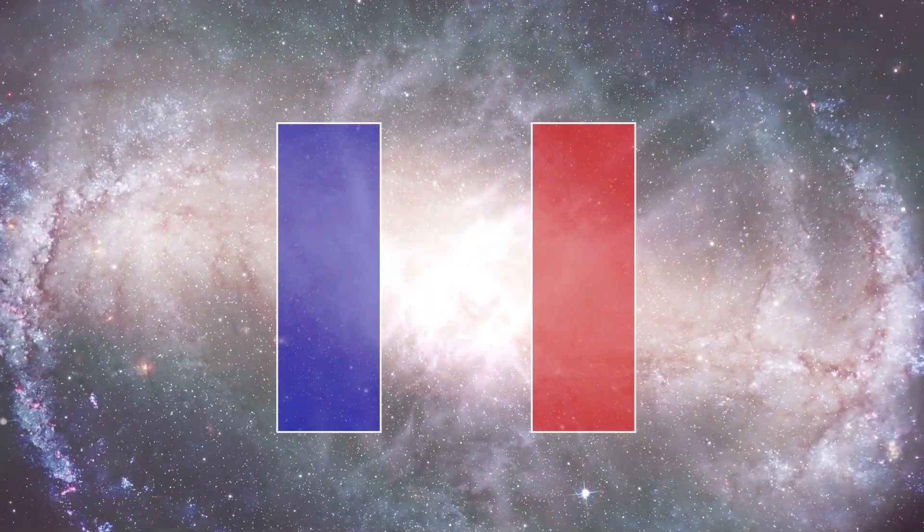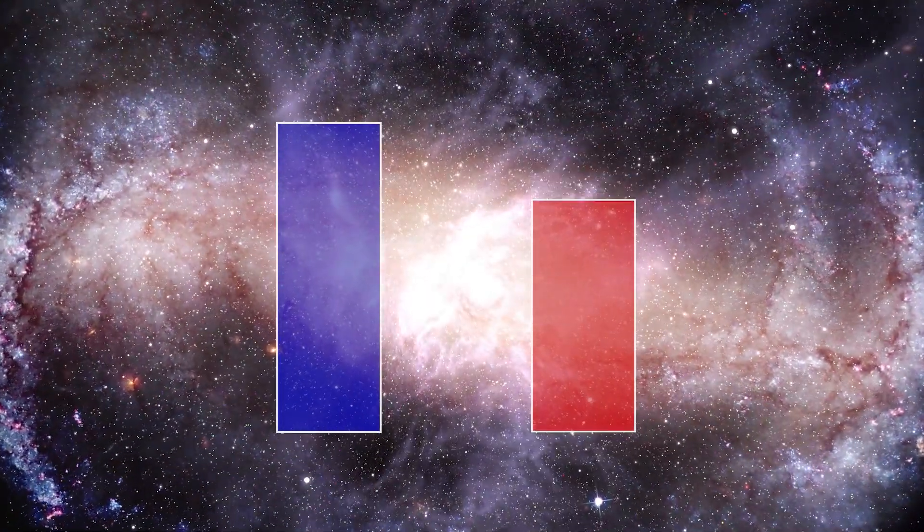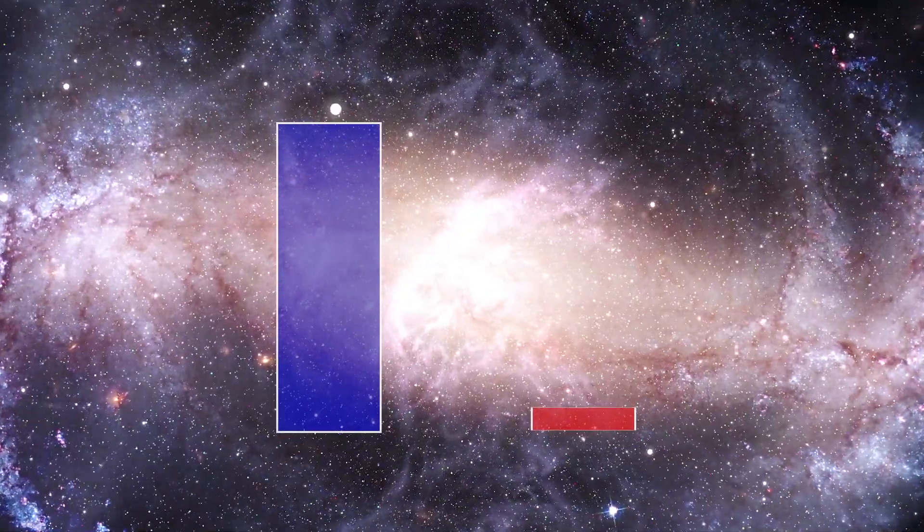Everything we know about the universe so far suggests that at the Big Bang, matter and antimatter should have been created in equal amounts, but somehow processes favored matter over antimatter.